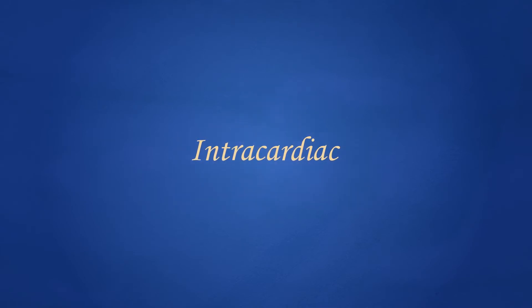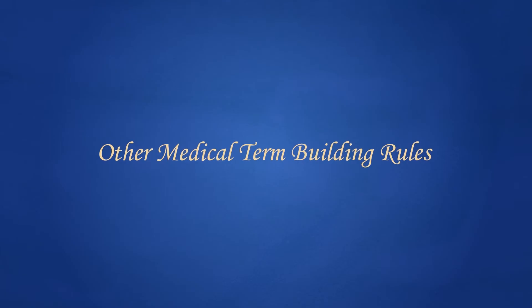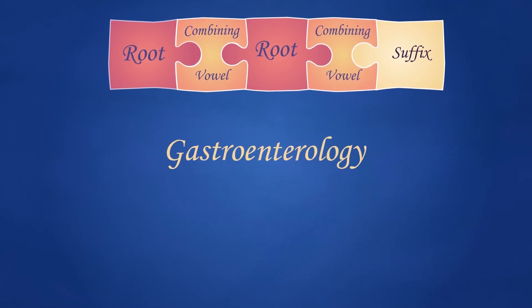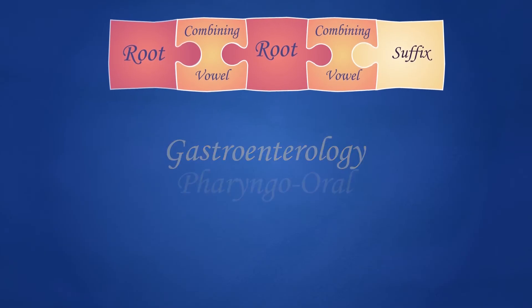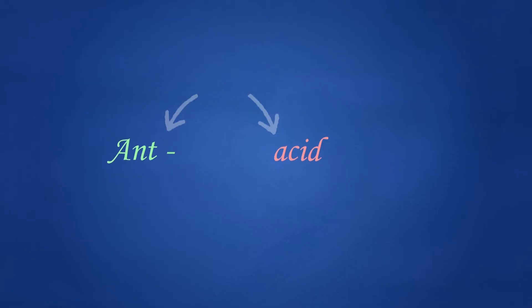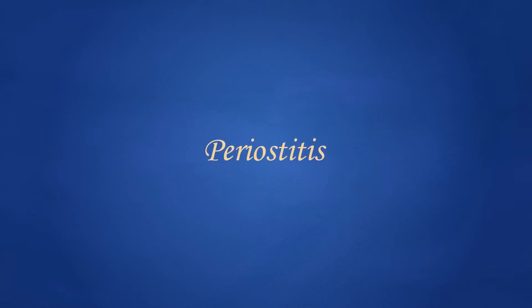This is the basic guideline, but there are other rules. When the combining forms of two roots are joined, the combining vowel of the first root is kept in place, as in the term gastroenterology. But there are a few exceptions to this rule which are hyphenated, as in pharyngo-oral. And when a prefix that ends in a vowel is added to a root that begins with a vowel or h, the vowel of the prefix is dropped, as in the term antacid. This is not a strict rule and there are many exceptions, as in the term periostitis.